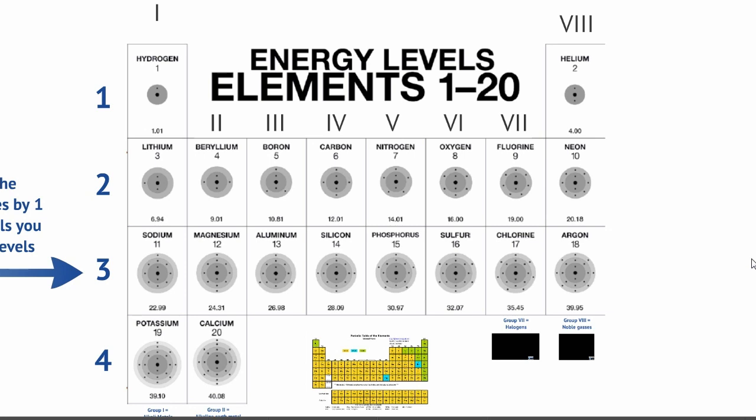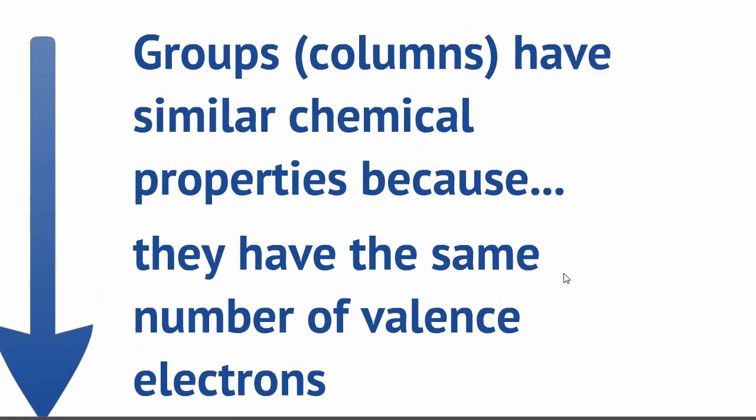We're probably more interested in the groups — the columns going up and down. Groups are chemical families, and the periodic table was actually organised into groups long before we knew about electron structure. These groups were originally based on properties. Elements in the same group behave in similar ways — and interestingly, it's not because they're a similar size, since every group has atoms of quite different sizes. It's got to do with the number of valence electrons.